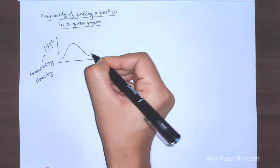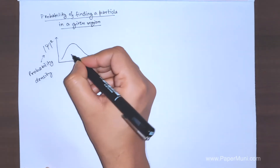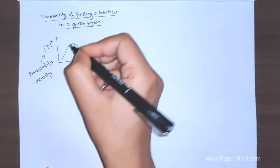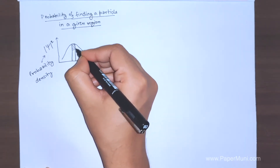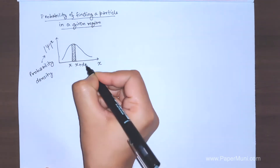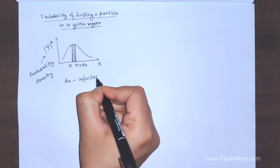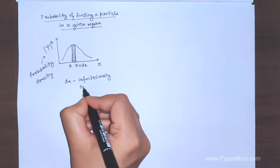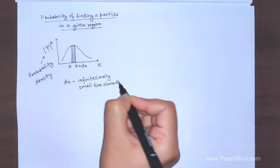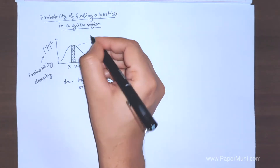So if we have this kind of plot — this is a one-dimensional distribution along x — it could be any shape, just taking a representative distribution. If you want to find out the probability of finding the particle in a region given by x to x+dx, where dx is an infinitesimally small line element, very very small compared to x, then this area represents the probability of finding the particle in the range x to x+dx.